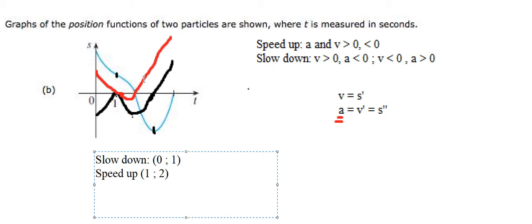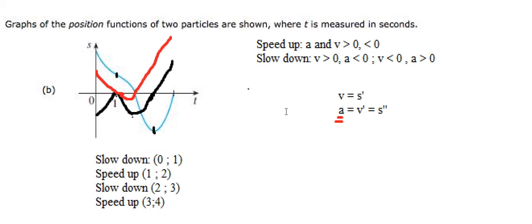From two to three, the red line of acceleration is positive but the dark line of velocity is negative — so this is slow down. From three to four, the dark line and the red line are both positive at the same time — so that's speed up. This is the answer to the question.